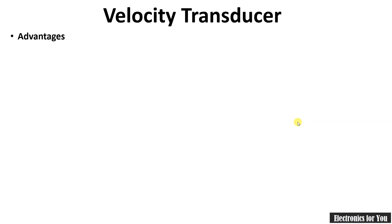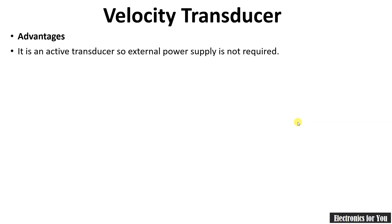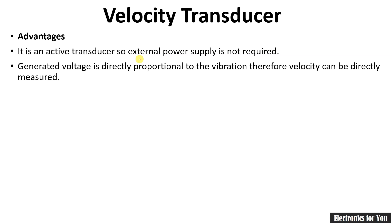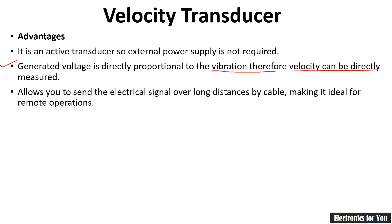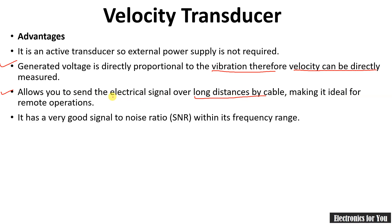The advantages of the velocity transducer: it is an active transducer, so no external power supply is required. The generated voltage is directly proportional to the vibration, so velocity can be directly measured. This transducer allows you to send electrical signals over long distances by cable, making it ideal for remote operations. The velocity transducer also has a very good signal-to-noise ratio within its frequency range.